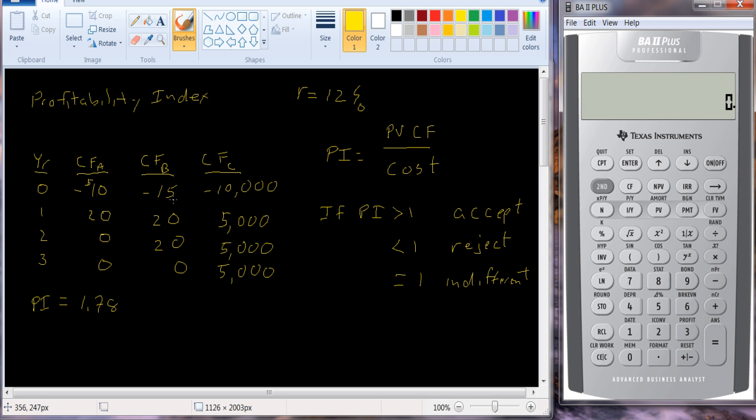Let's check out the profitability index for project B. I need to clear my time value of money workspace. I have $20, and that's going to appear two times. The interest rate is 12, and I'm going to compute my present value, so that's 33.80. Let me divide that by minus 15, and I get a profitability index of 2.25.